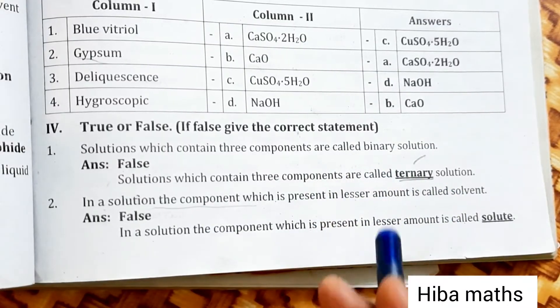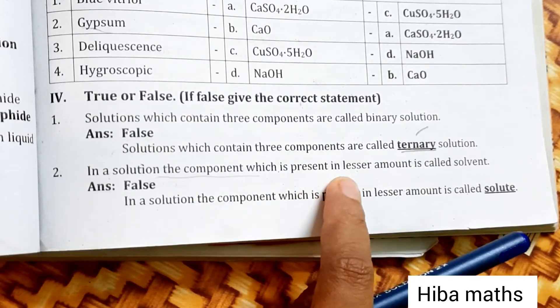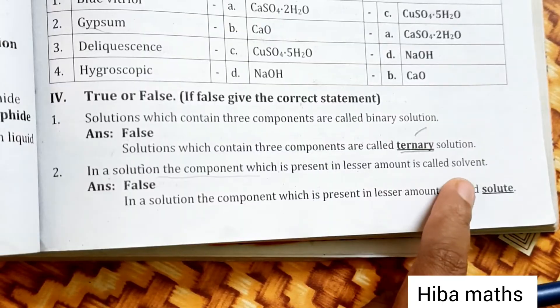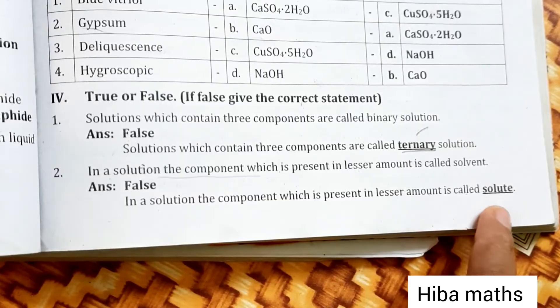In a solution, the component which is present in lesser amount is called solvent. False. In a solution, the component which is present in lesser amount is called solute.